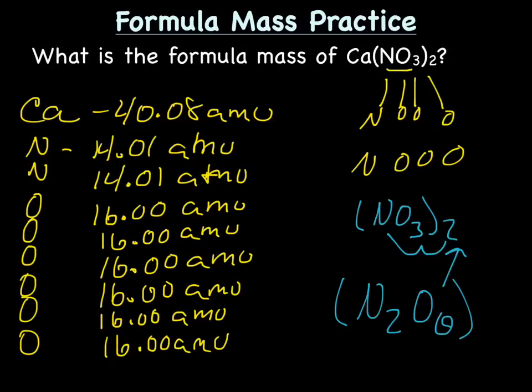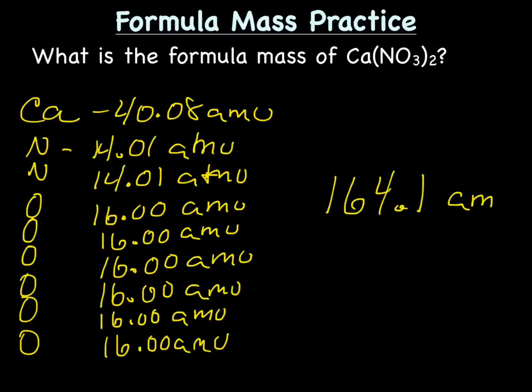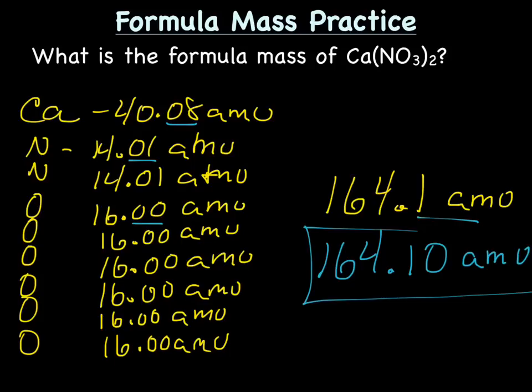And now we just add all of the average atomic masses up. I got on my calculator 164.1 amu. So now we need to think about sig figs. And because we're adding, we don't actually look at sig figs, right? We look at number of places after the decimal. And each of our numbers has two places after the decimal. And I only have one in my answer, so I can add a zero placeholder.